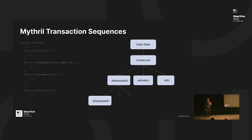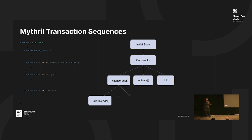Mythril's transaction sequences work like this: first we start with an initial state, then it executes the constructor. With this, we have three possible functions — killerize, activate, and kill. In the first transaction, it executes all three possible functions. In the second transaction, there are three more possible functions, so it's three squared. With three transactions, it would be three cubed. Mythril has optimizations where it prunes many useless states, so although it's still exponential, it's much lower than three to the power of the transaction count.